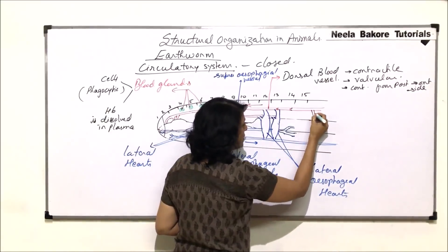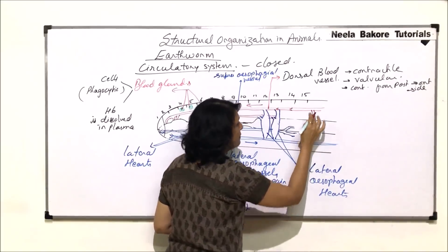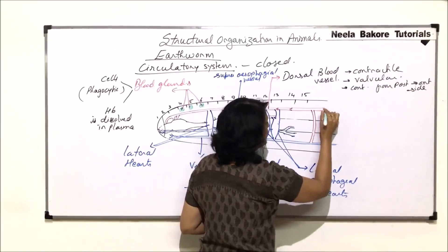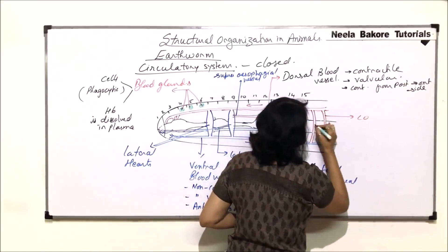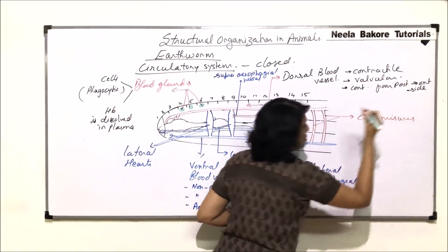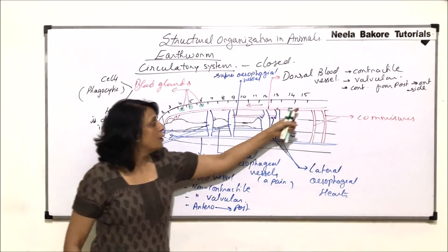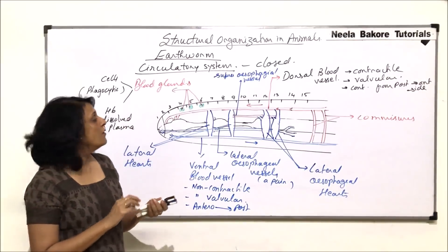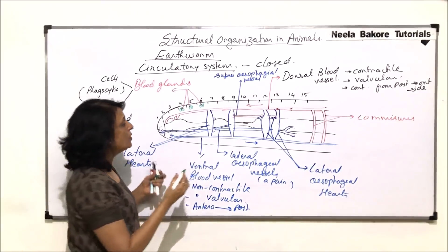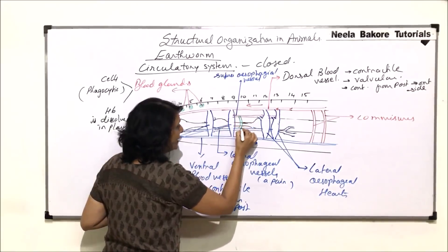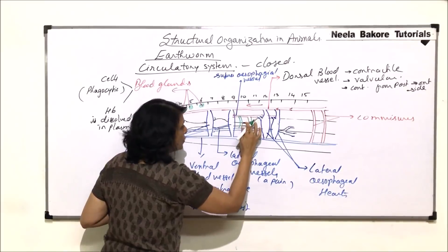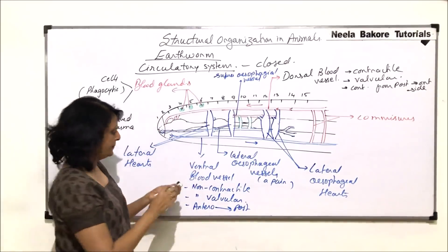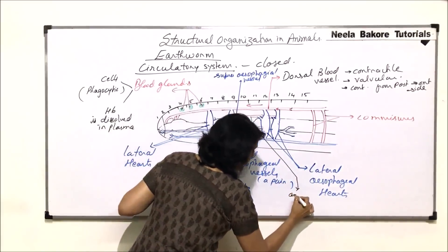After the 15th segment, there are many thin vessels connecting the dorsal and the ventral vessels — these are known as commissures. In the 9th and 10th segments, there are a few more connections, but these are only between the supraesophageal and the lateral esophageal vessels. These are known as anterior loops.